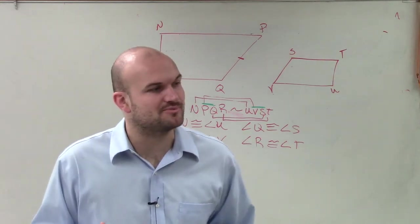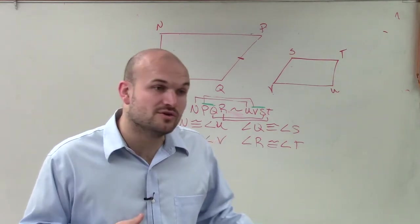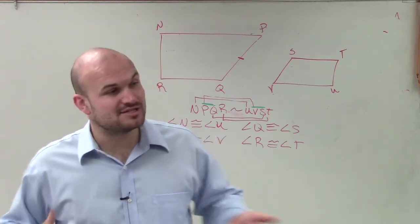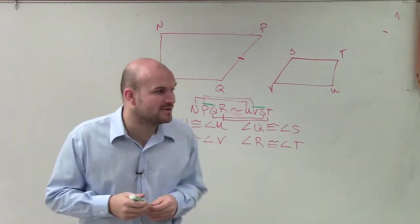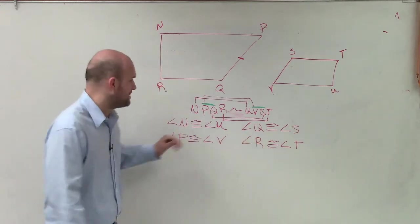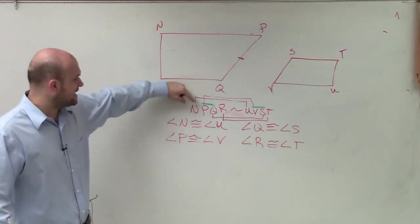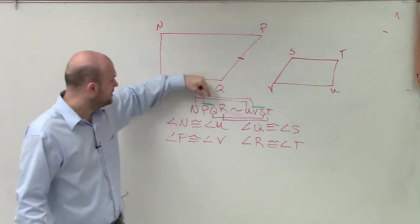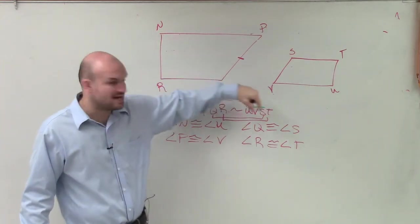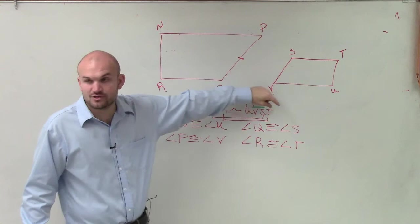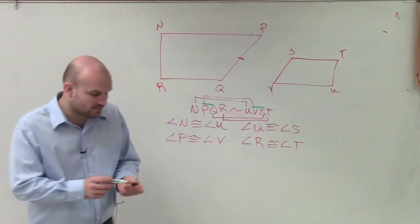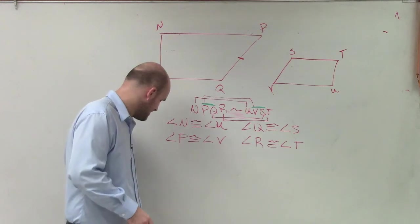It's OK. But that's a very important thing, because a lot of times when you guys are doing these problems, you might get confused on looking at the figures. The figures might try to mix you up. So one thing you guys can always do is go back to your similarity statement. And what you can look at this is say, oh, NP is going to be a ratio with UV. PQ is a ratio with VS. And QR is a ratio of ST. And then NR is a ratio with UT.